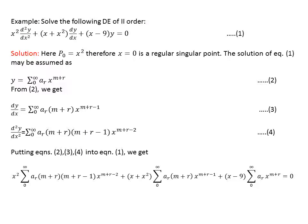Here we have taken an example: x square d2y by dx square plus x plus x square into dy by dx plus x minus nine into y equal to zero. So p naught is x square; putting x equal to zero, p naught will also be zero. So x equal to zero is a regular singular point.